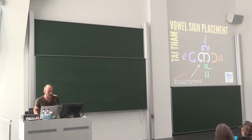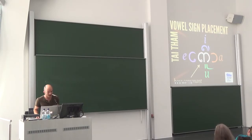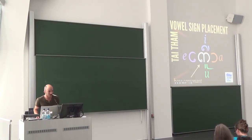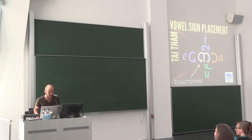Vowel signs can appear anywhere around a base consonant. If they appear before the consonant — like the vowel 'a' shown before that 'ka' here — then you need support from a shaping engine such as HarfBuzz. This is also true for the medial 'ra' that we saw earlier. You really need support from a shaping engine like HarfBuzz. And basically I designed my font to work with HarfBuzz.